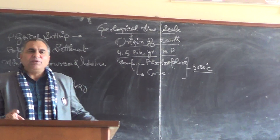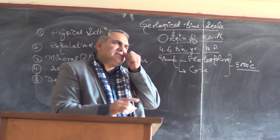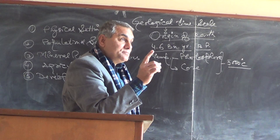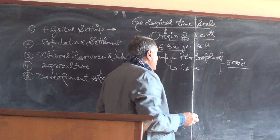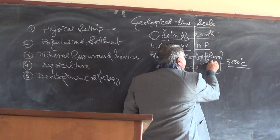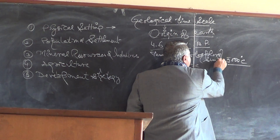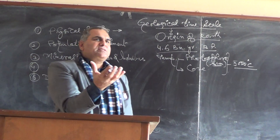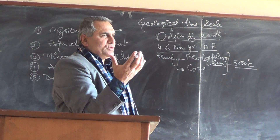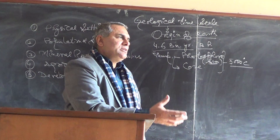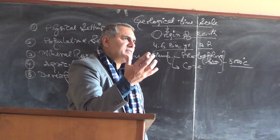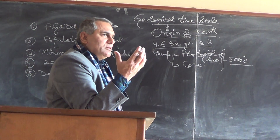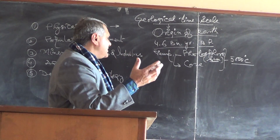Since the temperature is 5000 degrees Celsius at the photosphere of the sun, there are different theories about the origin of the Earth: the tidal theory, the planetesimal theory, and the big bang theory.